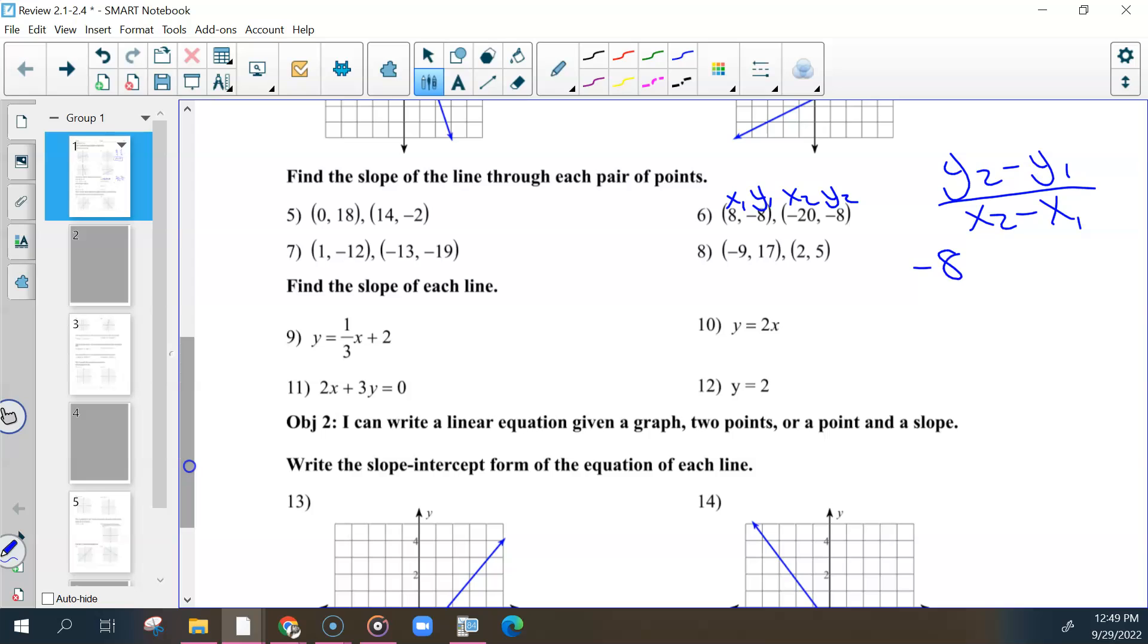Y2 would be negative 8, we are subtracting another negative 8, all over negative 20 minus 8. Negative 8 minus a negative 8 would become a plus, this would become 0, and 0 over anything would just become 0. So m equals 0 would be our answer.